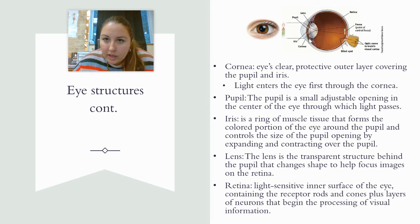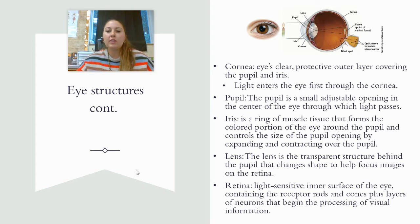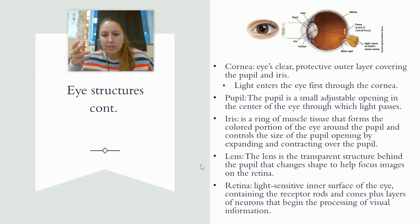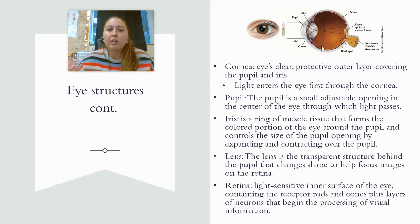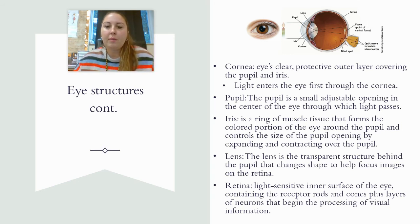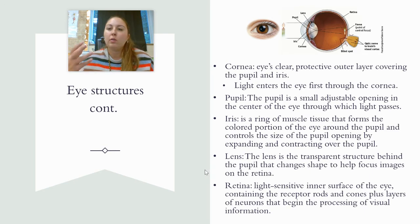So we have our cornea, our iris, our lens, and our pupil. The lens is the transparent structure that sits behind the pupil, and it basically helps us to focus images — just like the lens of a camera. At the very back of the eye there's a layer of cells that contain light-sensitive cells, and this is where transduction occurs in the eye — the transformation of light wave energy into neural impulses. It has special cells called rods and cones, as well as other specialized cells.